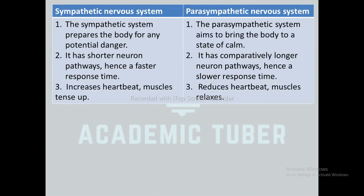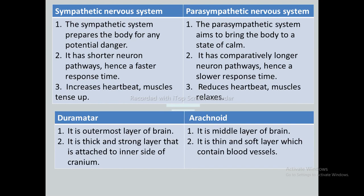Differences between sympathetic and parasympathetic nervous systems: the sympathetic nervous system prepares the body for potential danger, whereas the parasympathetic nervous system aims to bring the body to a state of calm. The sympathetic system has shorter neuron pathways (faster response), while the parasympathetic system has longer pathways (slower response). The sympathetic system increases heartbeat and tenses muscles, while the parasympathetic system relaxes muscles. Difference between dura mater and arachnoid: dura mater is the outermost, thick, and strong layer attached to the inner side of the cranium, whereas arachnoid is the middle, thin, and soft layer containing blood vessels.